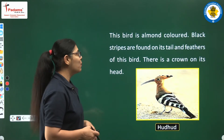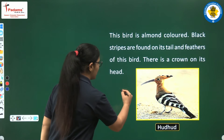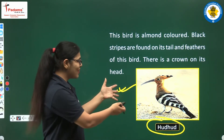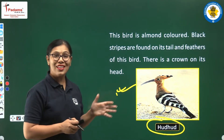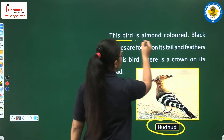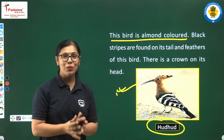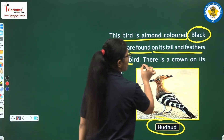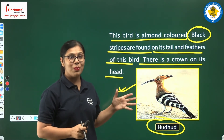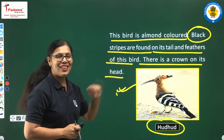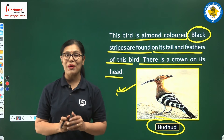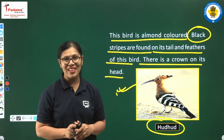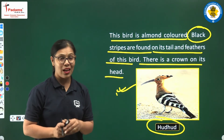Now we are looking at this bird which is named as Hudhud. So this bird is named Hudhud. What is special about this bird? See the structure of this bird — how it looks. It is looking beautiful. This bird is very colorful and black stripes are found on its tail and feathers. There is also a crown on its head. So this bird has a kind of crown on the head, as you can see in this picture.